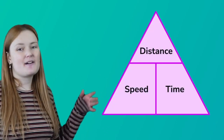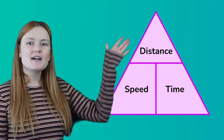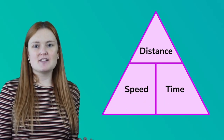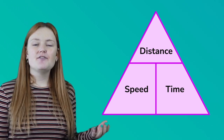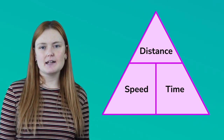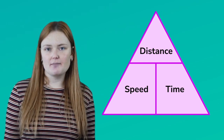For each of those we have a triangle to help us remember the formula. We have this triangle where we have speed and time on the bottom and distance on the top. We can then use this triangle to find any of the formulas that we need based on which two pieces of information we're given.